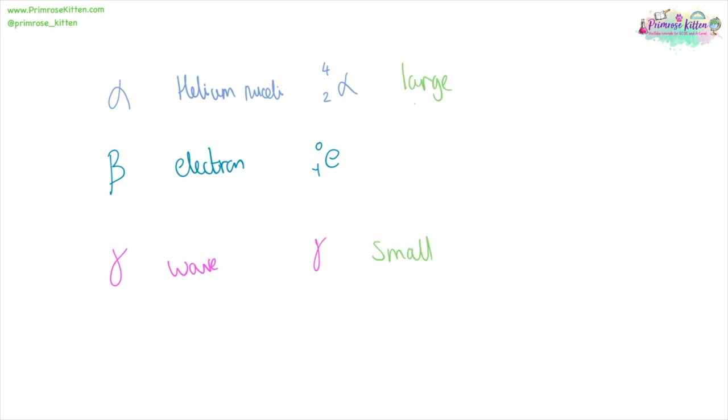Alpha radiation is very large, whereas gamma radiation is very small. Alpha radiation is highly ionizing, whereas gamma radiation is not. Ionizing means how good it is at knocking electrons off. So how good it is at turning something into an ion. Gamma radiation is highly penetrating, whereas alpha is not.